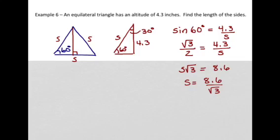And finally I'll rationalize that denominator and I have 8.6 square root of 3 over 3. And that's my final answer and it's the exact answer.